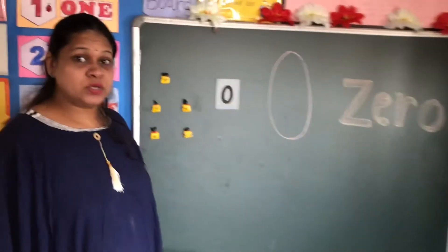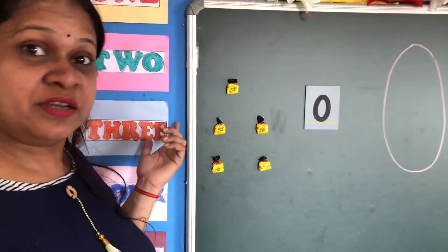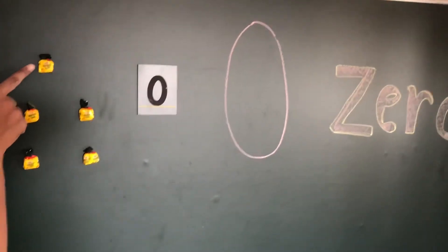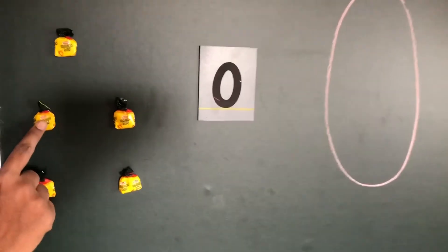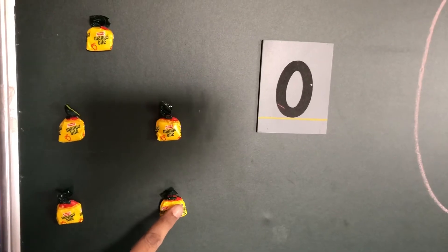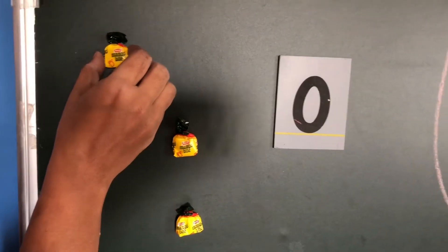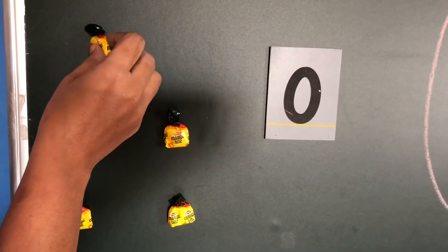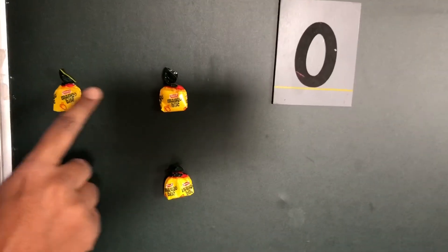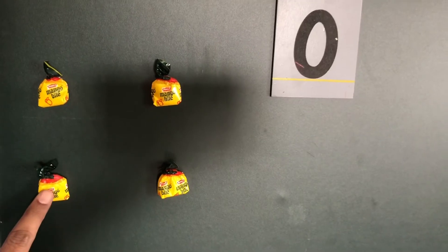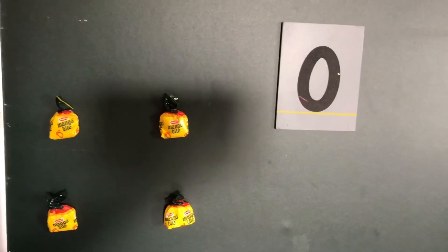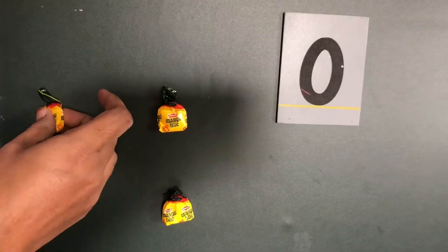Now we are going to learn this concept in a different way. See, what is this? How many chocolates are there? One, two, three, four, and five. Now I've eaten one chocolate. See, I'm eating one now. How many are remaining? One, two, three, and four.